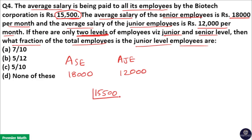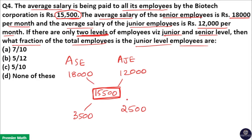Now, 18,000 minus 15,500 gives a difference of 2,500, and the difference between 12,000 and 15,500 is 3,500. Taking the ratio between these two values and cancelling the common factor — five goes into 35 seven times and five goes into 25 five times — giving us a simplified ratio.